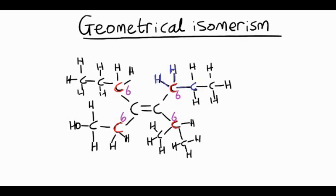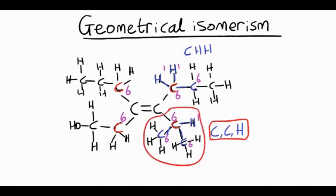And then we start working our way out. So on the top right, you've got carbon and two hydrogens, 6-1-1. So list them in order of atomic number, CHH. Bottom right, you've got CCH, 6-6-1. So we have our priority group earlier in the list. So the bottom one is our priority on the right-hand side.